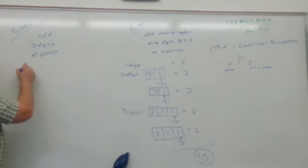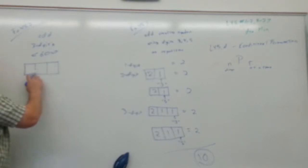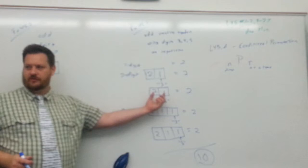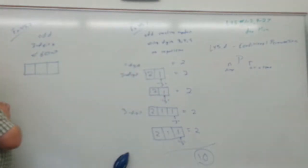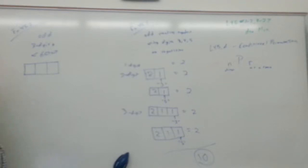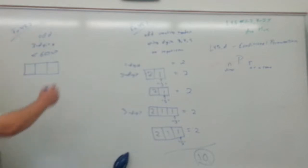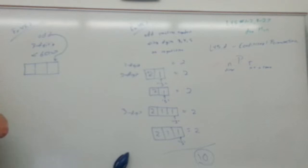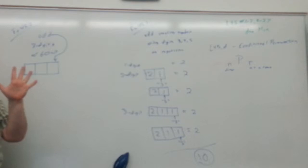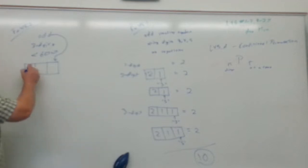Since it has to be three digits, we'll have exactly three boxes. For the number to be less than 600, the hundreds place can't be 6 or higher, and can't be 0 (then it wouldn't be a three-digit number). So the hundreds place options are 1, 2, 3, 4, or 5 — that's five options.